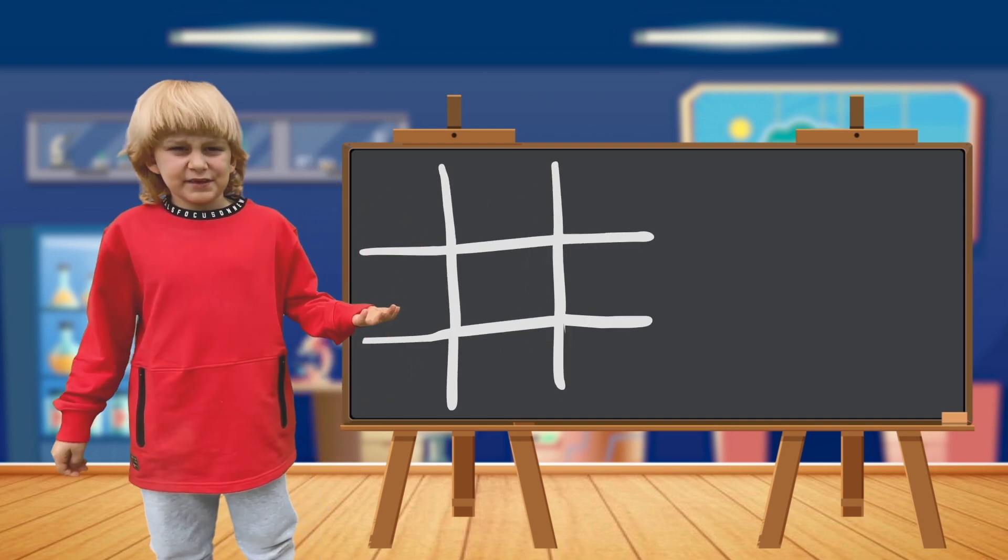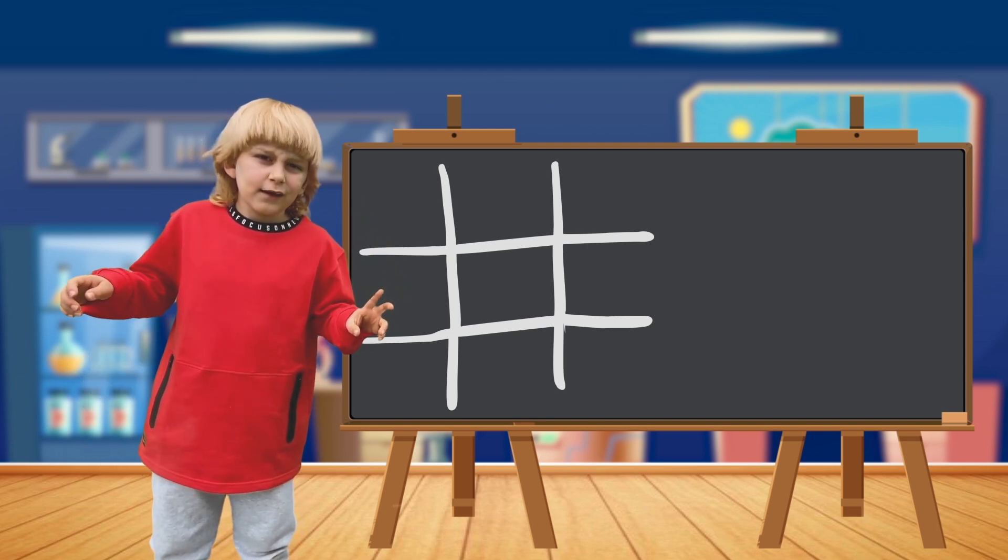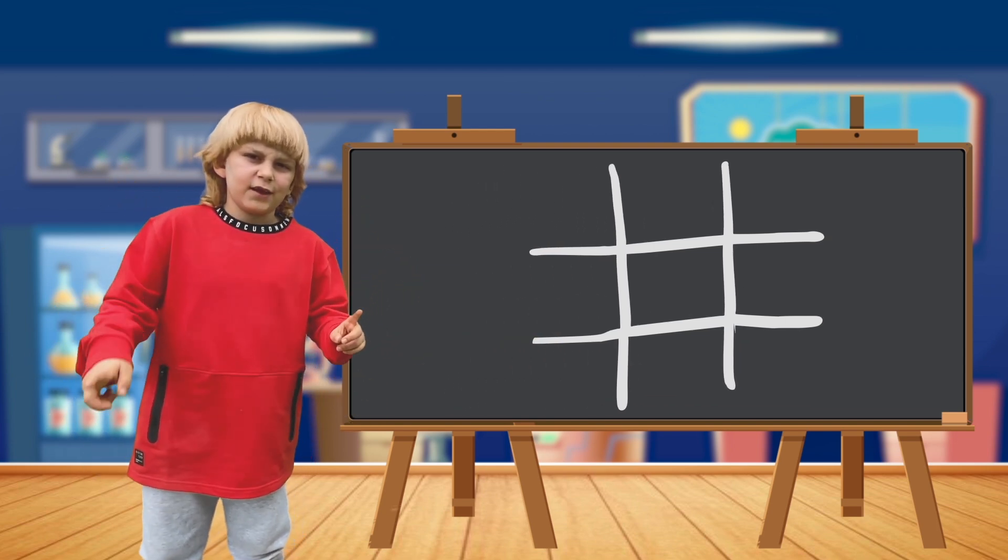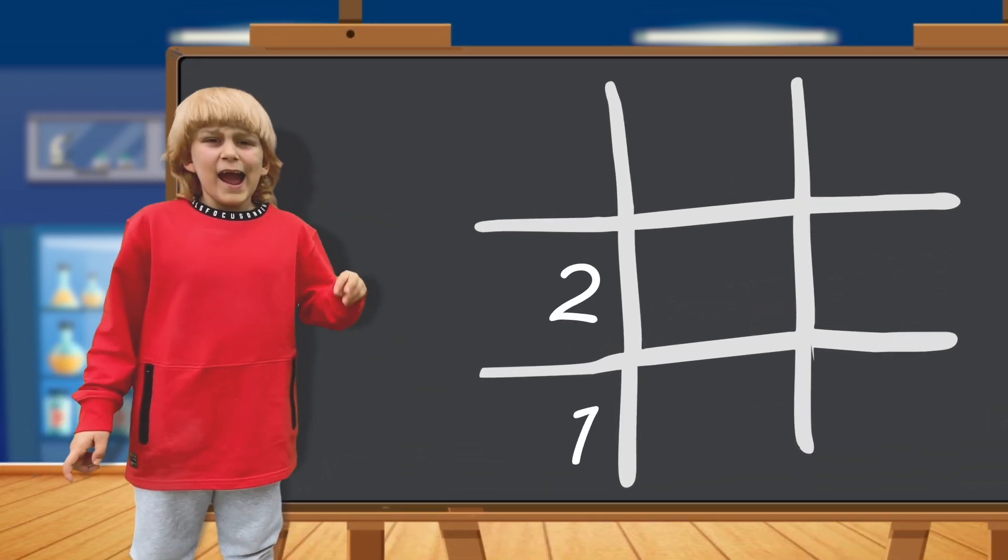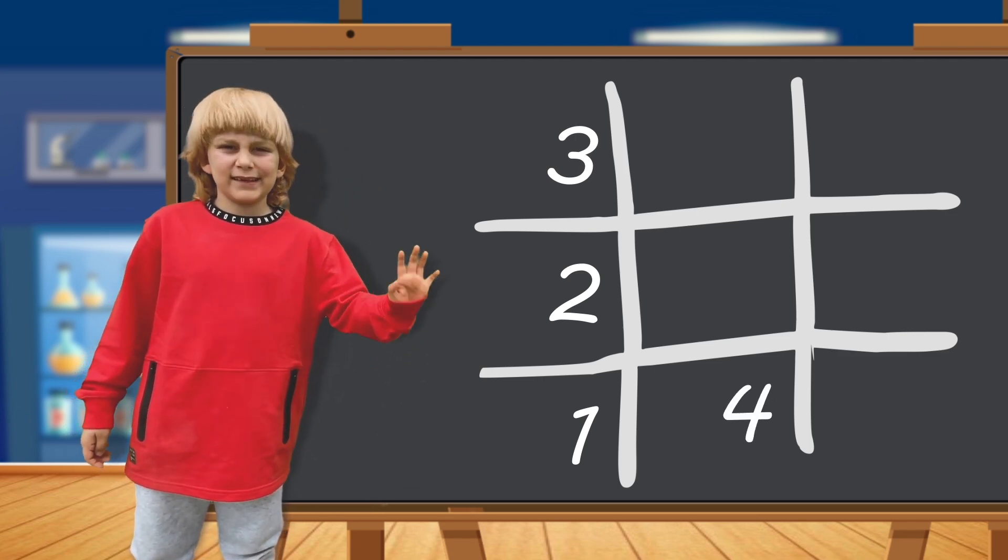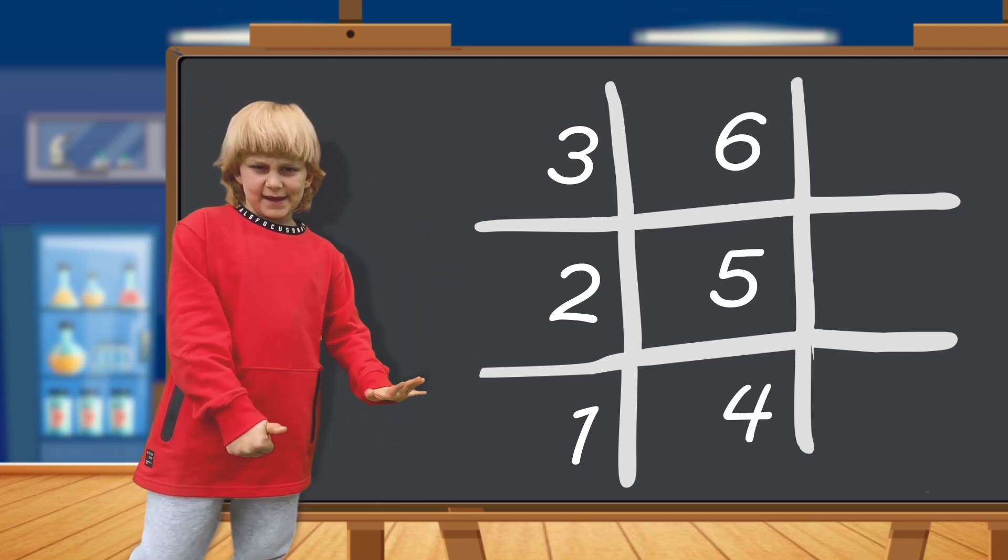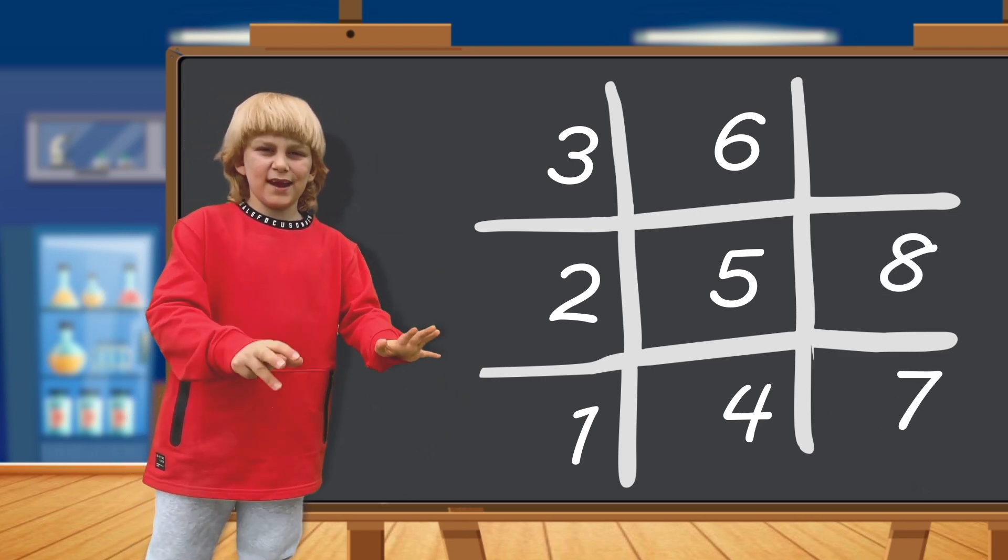Now, when you have your three in a row, we will start from the bottom left square, writing the numbers from one to nine. So, one, two, three, four, five, six, seven, eight, nine.